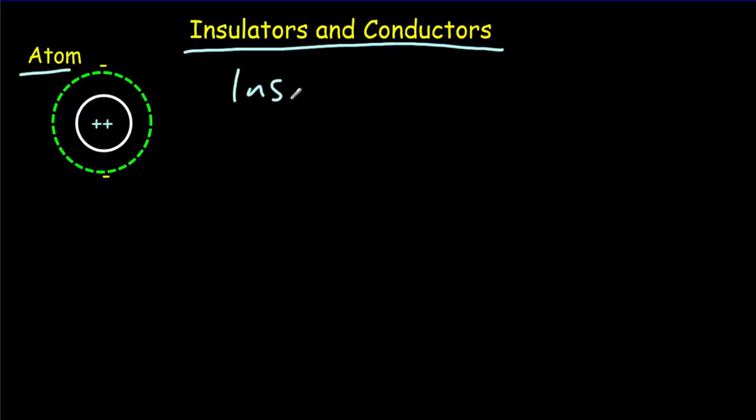...the electrons are going to be attached to the positive nucleus. There's going to be a strong bond there, and your atom is going to be balanced, an equal amount of positive and negative charge.